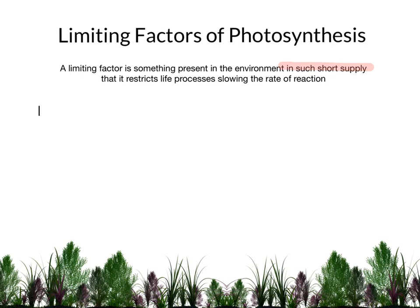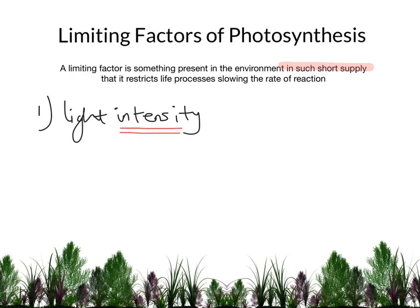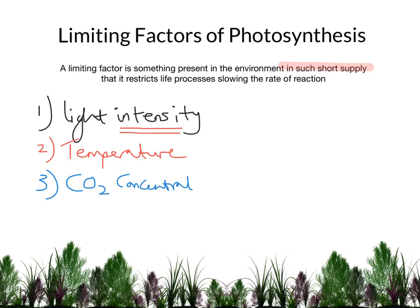There are three key limiting factors of photosynthesis. The first one is light intensity. When talking about light intensity, avoid using the term 'light' on its own, or even worse, 'sun' or 'sunlight' — exam boards really don't like those. The correct terminology is light intensity, and units for this tend to be arbitrary units. The second important limiting factor is temperature, measured in degrees Celsius. The third important limiting factor is CO2 or carbon dioxide concentration.